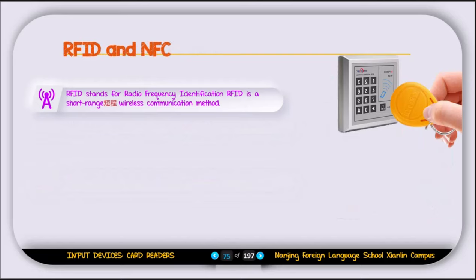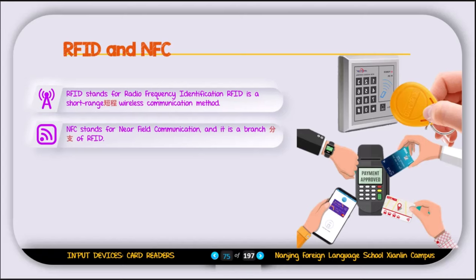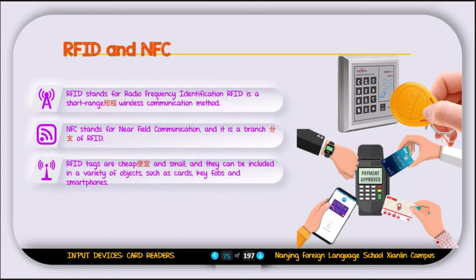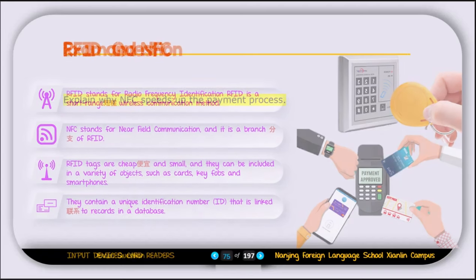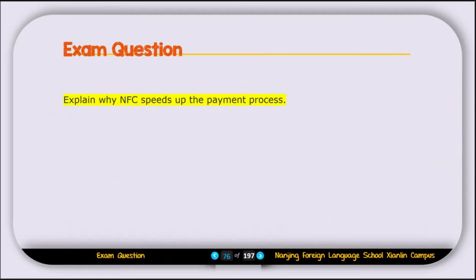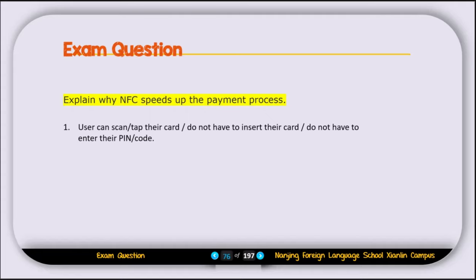RFID stands for Radio Frequency Identification and is a short-range wireless communication method. NFC stands for Near Field Communication and is a branch of RFID. RFID tags are cheap and small and can be included in cards, key fobs, and smartphones. They contain a unique ID linked to a record in a database. An example question: explain why NFC speeds up the payment process. The answer: users can tap their card without inserting it or entering a PIN, because NFC is a contactless payment method.